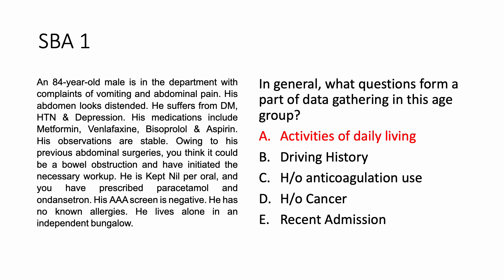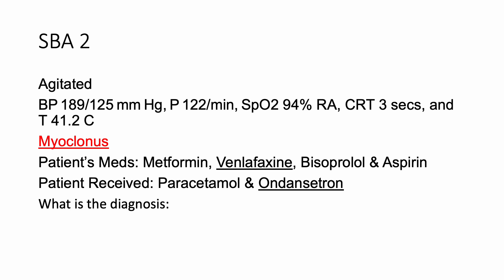Activities of daily living include whether they need help with cooking, shopping, cleaning themselves, etc. Now for part two — the patient becomes agitated with abnormal vital signs and myoclonus. Looking at the patient's medications: metformin, venlafaxine, bisoprolol, and aspirin. The patient also received paracetamol and ondansetron. Venlafaxine and ondansetron are underlined — there is a reason for that, which I'll address next. The diagnosis here is serotonin syndrome.